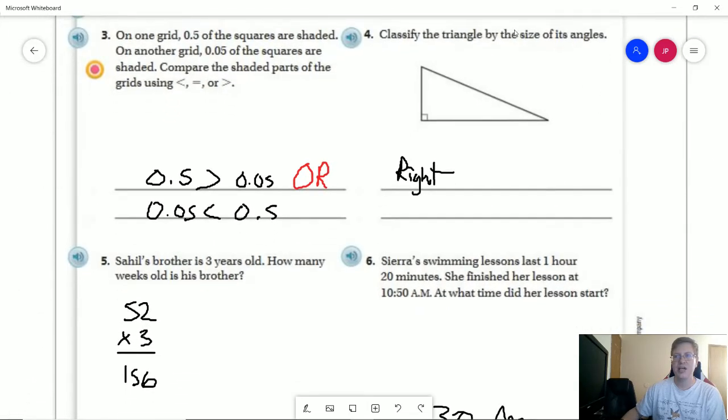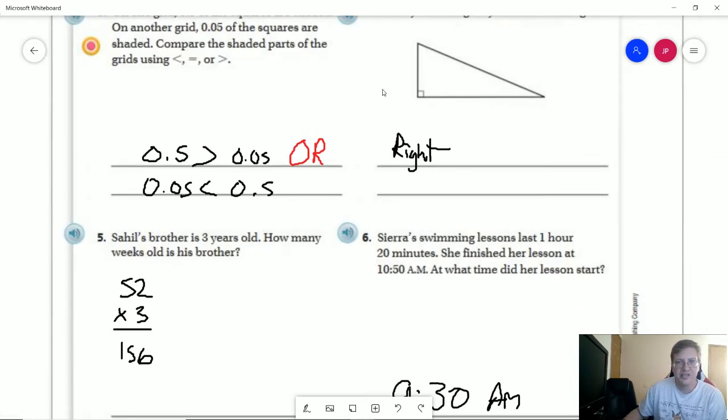For number four, we're only worrying about classifying it by the size of the angles. I believe at some point in time, I think next year you will also have to be able to classify them by the lengths of their sides. And so there would be an additional word that goes out with this, because all three of these sides would be of different lengths to have a right angle.